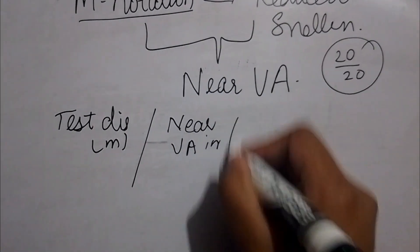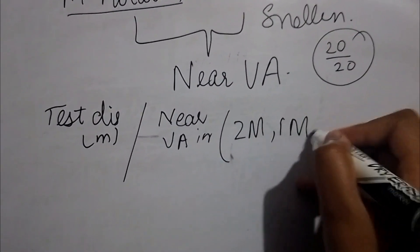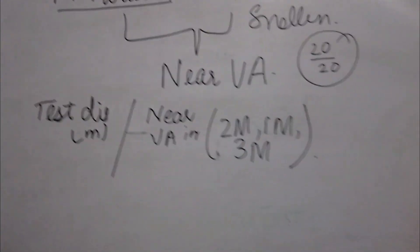Basically we get it as 2M, 1M, 3M, such that.